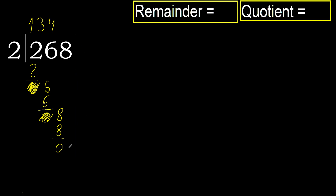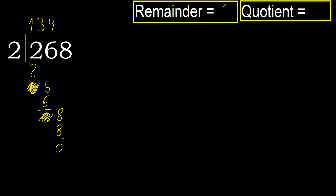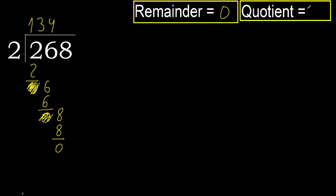That is not a number, therefore finished. 268 divided by 2 is 134.